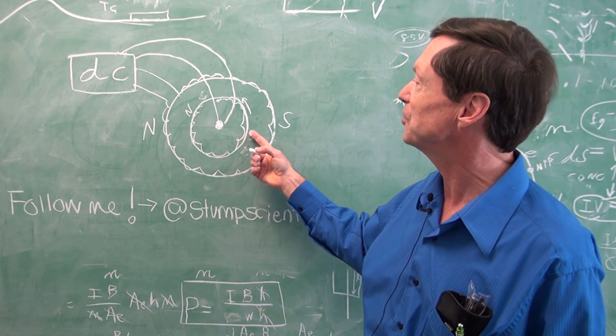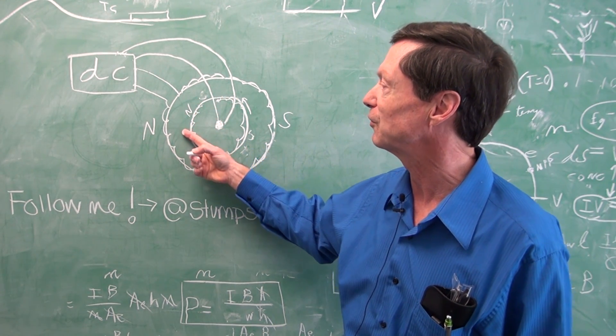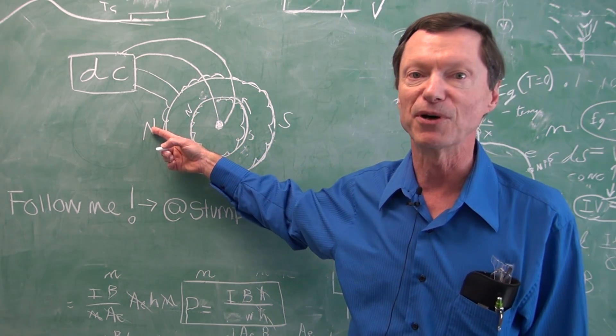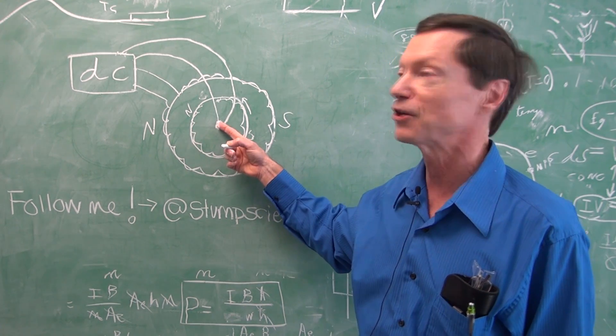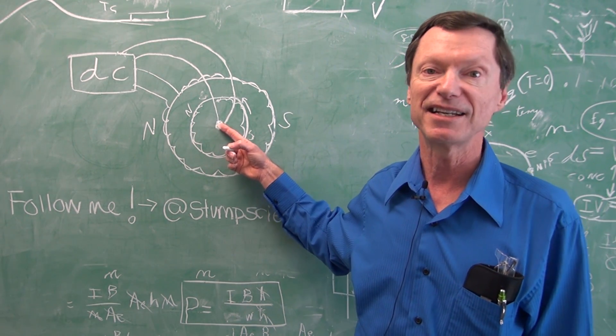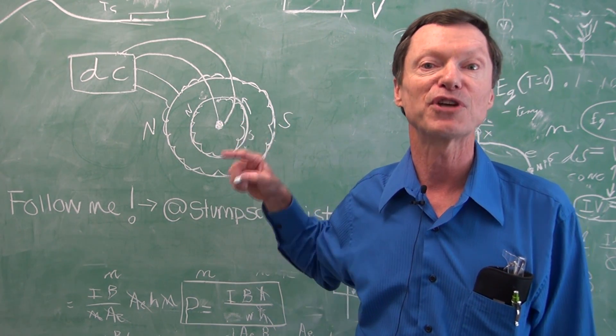And now it has to keep rotating to get this part of the rotor next to this north pole. But just before it gets there, the current changes direction again. And the south and the north change places again.